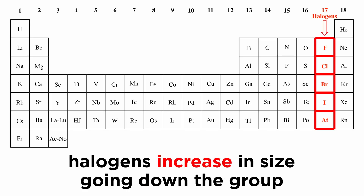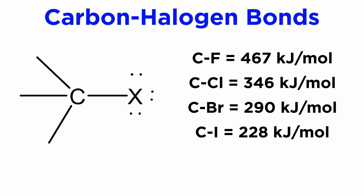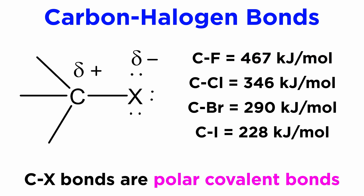Halogens increase in size going down the halogen group from fluorine to iodine, so the corresponding carbon-halogen bonds must also get longer as we go down the group to accommodate the larger atoms. As bonds get longer, they also get weaker, so a carbon-iodine bond is much weaker than a carbon-fluorine bond, due to both length and differing polarity. In general, the carbon-halogen bond will always be polar, with a partial positive charge on the less electronegative carbon and a partial negative charge on the halogen, and this will strongly influence the type of chemistry that occurs at this functional group.